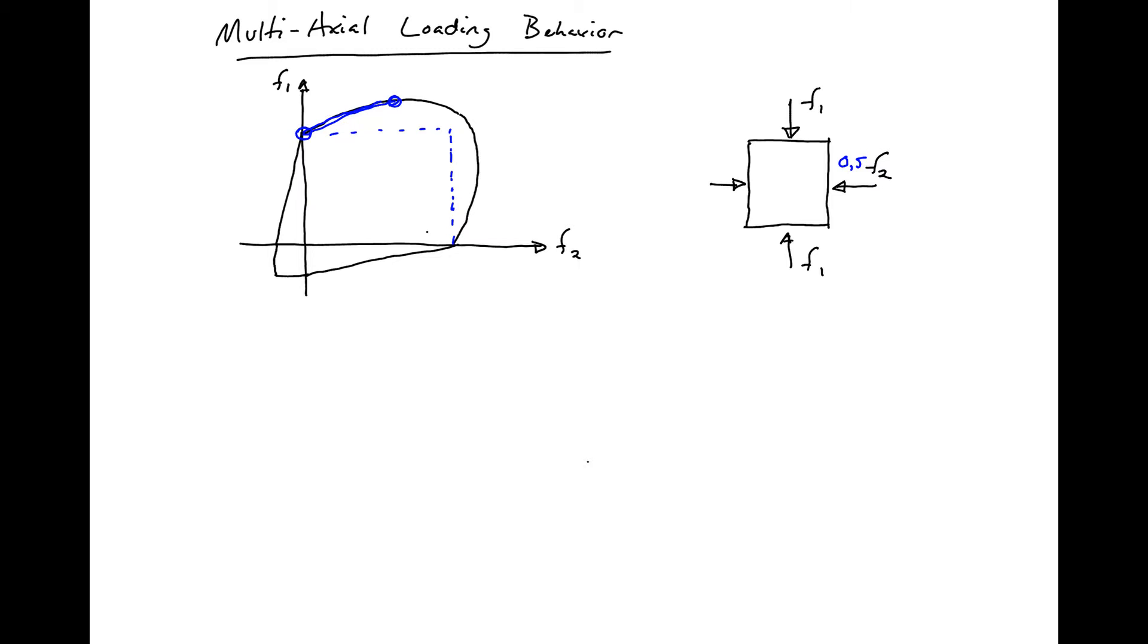If we add any kind of tension to our specimen with F1, you can see that the compressive strength F1 is going to greatly decrease. When we have a certain amount of tension in the F2 direction, we're going to have no compressive strength.